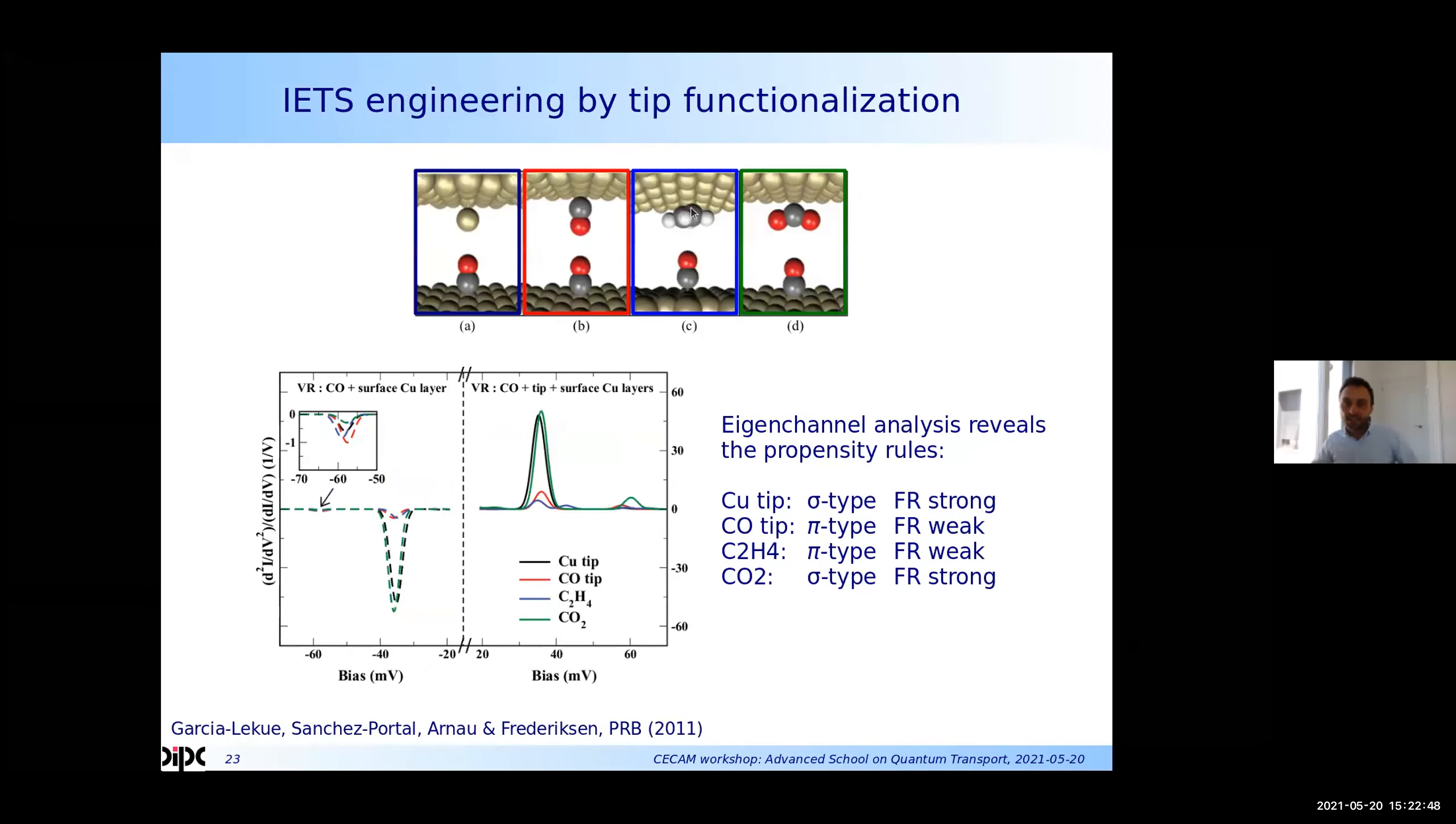So by changing the symmetry on the tip side, one can put different molecules on the tip side and then explore the interplay between the orbital symmetries and the intensities of the inelastic signal. So for instance, if the tip is replaced by a CO molecule or this C2H4, one can suppress dramatically the signal from this frustrated rotation mode, because we have effectively suppressed the S wave character from the tip side by having the extension on a pi type molecule.